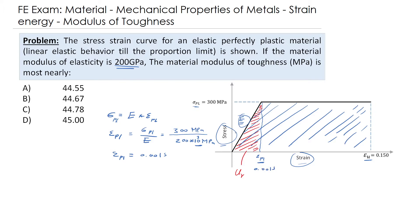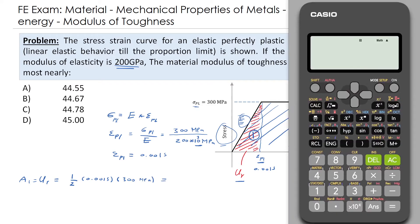To find the modulus of toughness, we evaluate Area 1 (the modulus of resilience) and Area 2 (the rectangle). Area 1 equals one-half times the base times the height, which is one-half times 0.0015 times 300 megapascal, giving 0.225 megapascal.